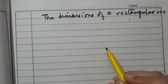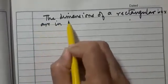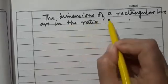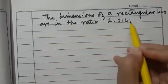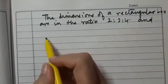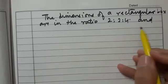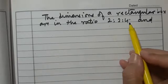The dimensions of a rectangular box are in the ratio 2:3:4. You can imagine it as a cuboidal box where the length, breadth, and height are in the ratio 2:3:4.